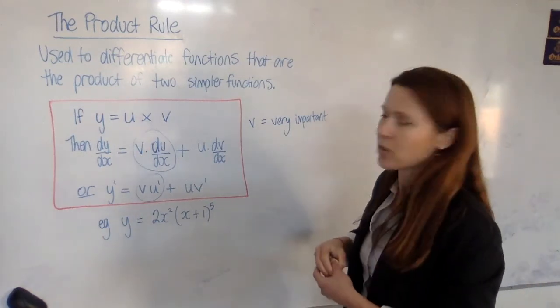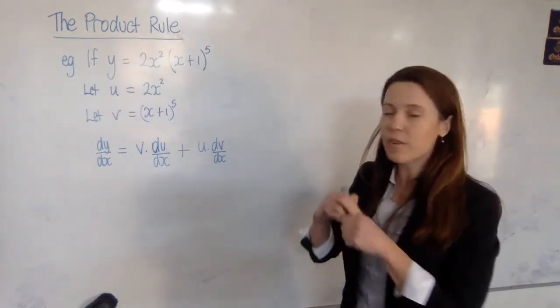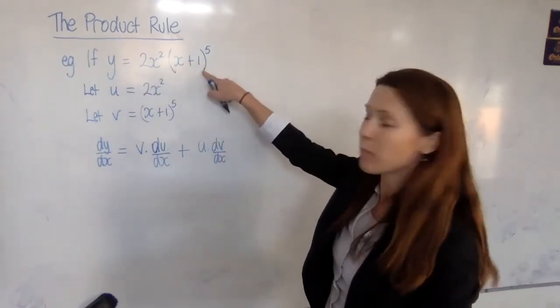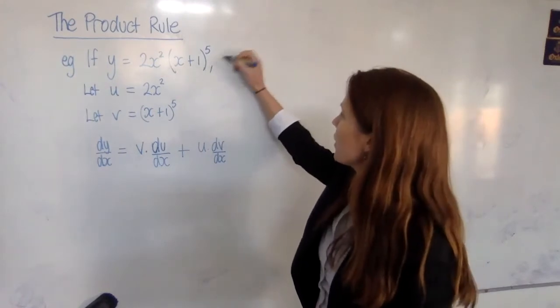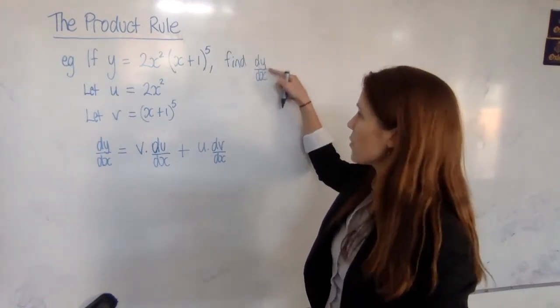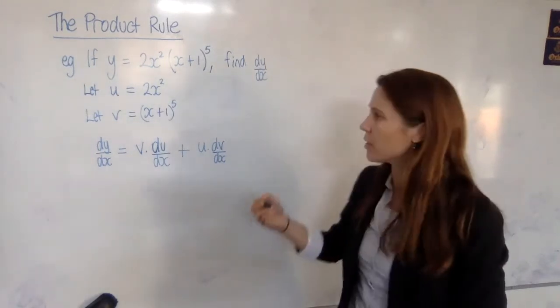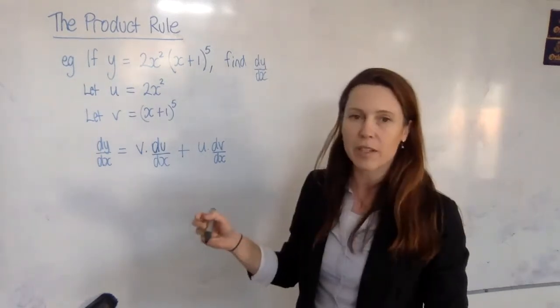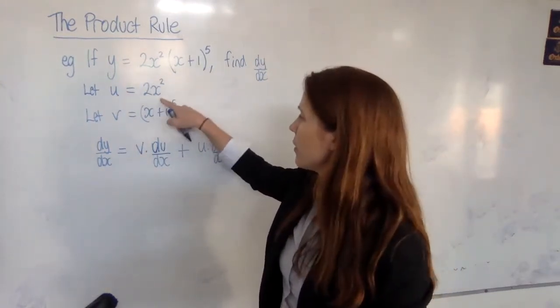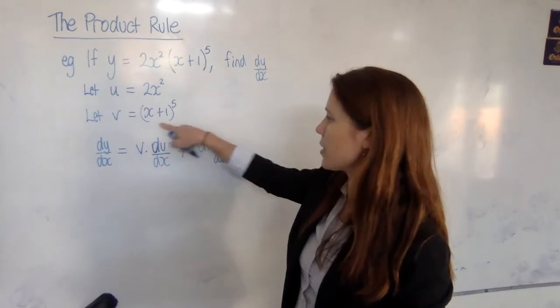So let's have a look at how to do this. So I've rewritten my example at the top of the page. If y equals 2x² multiplied by (x+1)^5, find dy/dx. Now, we'll use the dy/dx notation this time, in this example. Now, the first thing we need to do is define u and v. So let u be the first part, and let v be the second part.